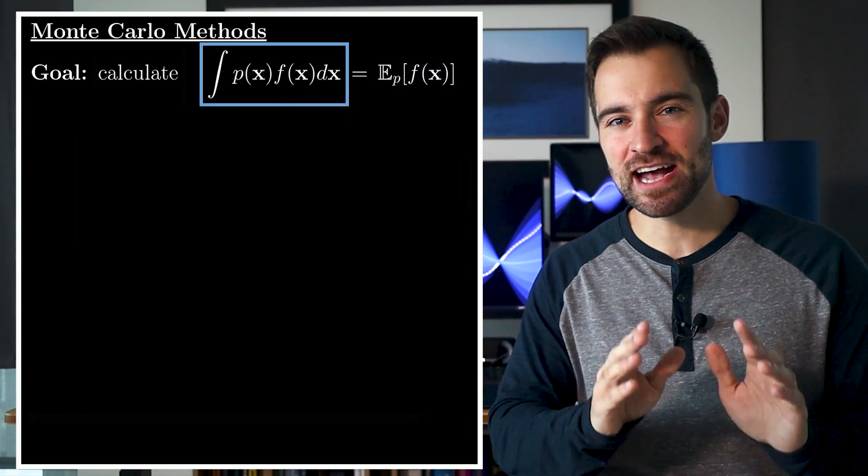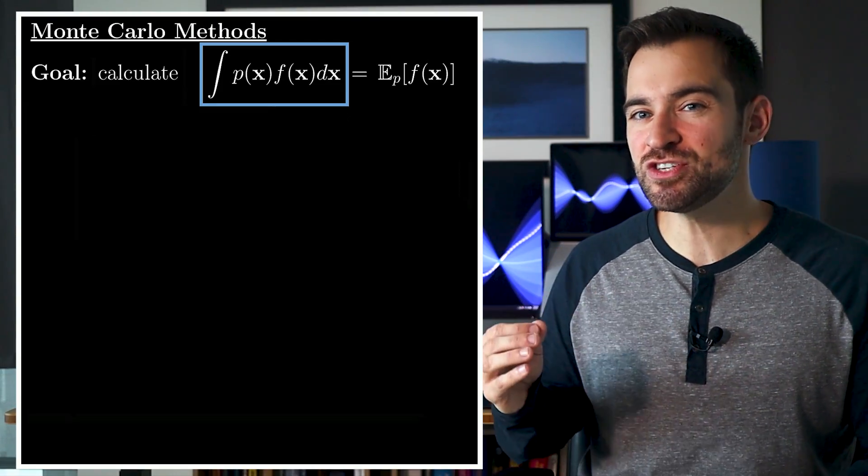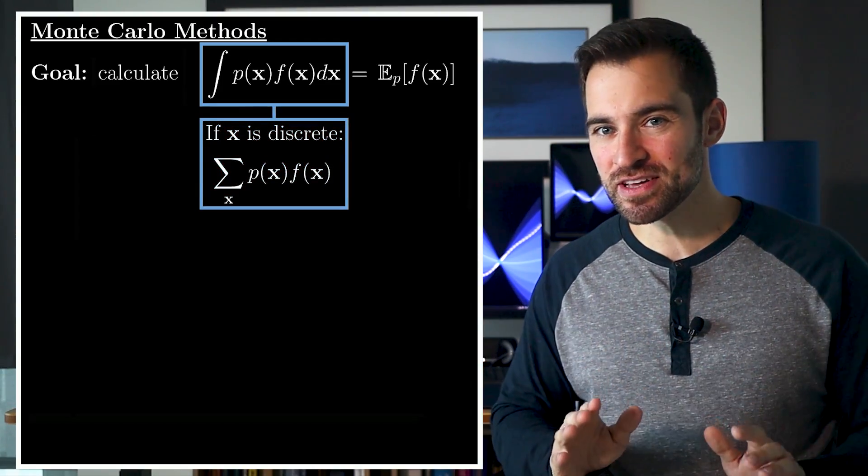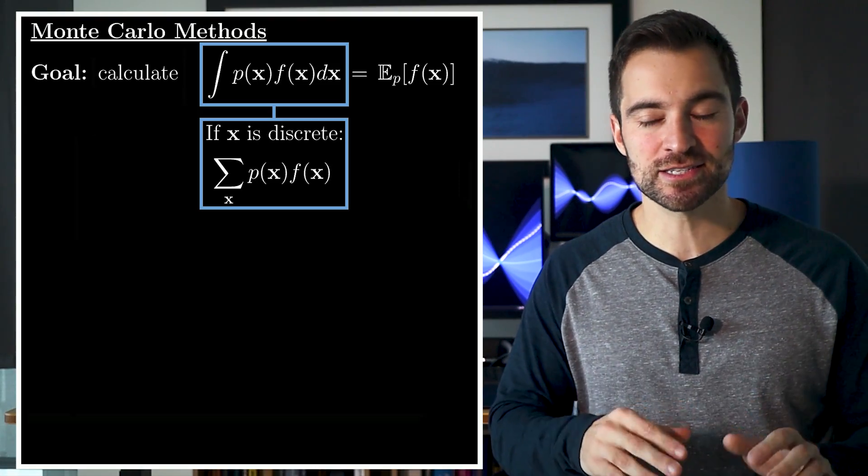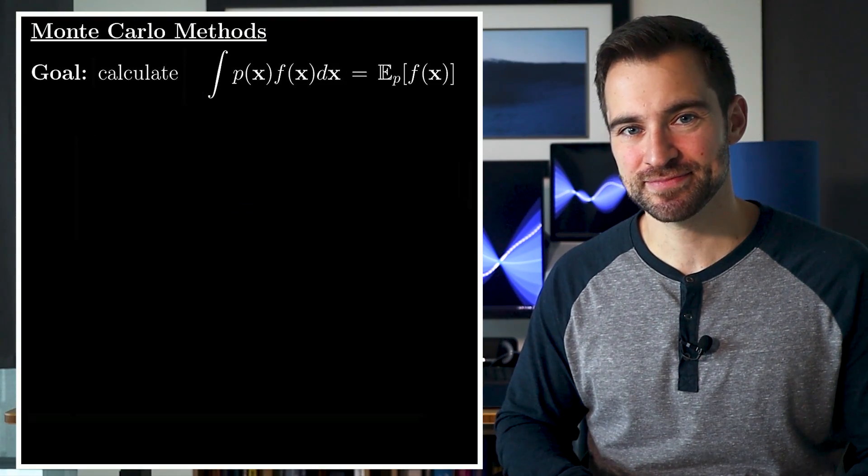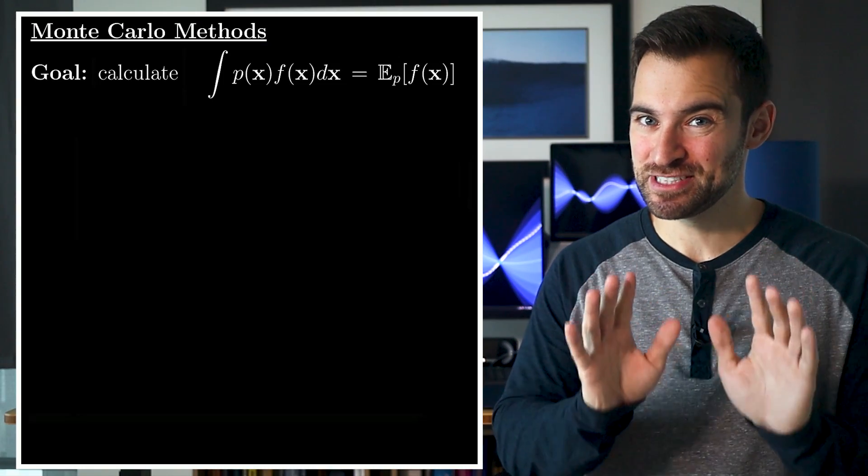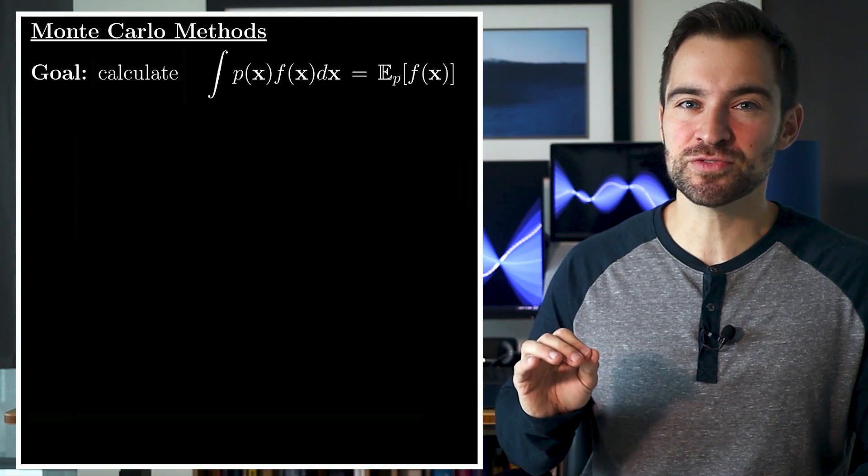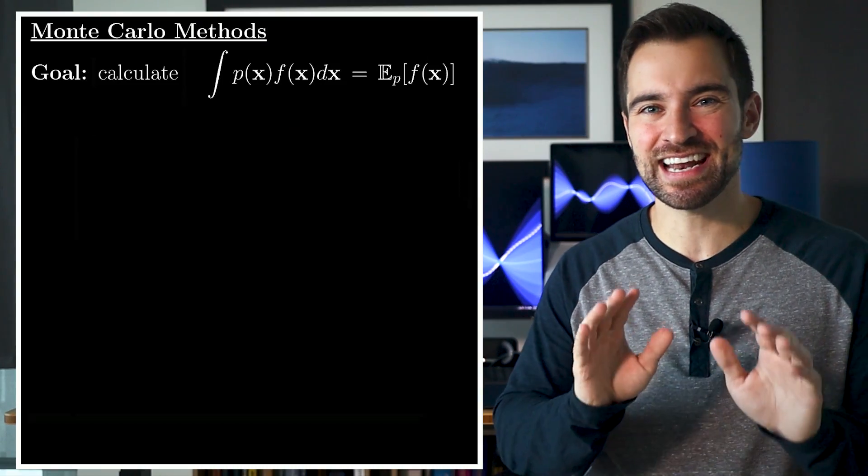As an aside, if x were discrete, then this integral would turn into a sum. Considering none of the concepts really change for the discrete case, we'll continue with the continuous case. Okay, now the problem is, sometimes, in fact, a lot of the time, this integral is impossible to calculate exactly.